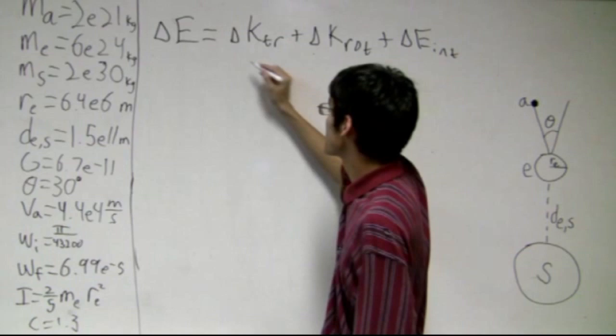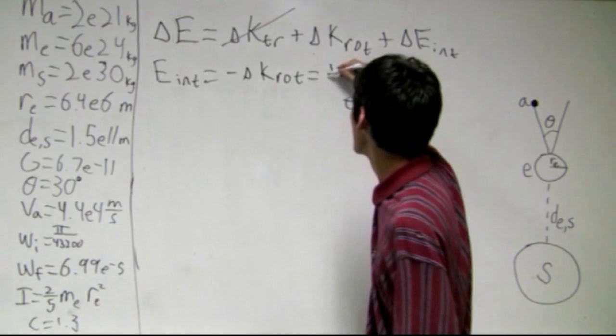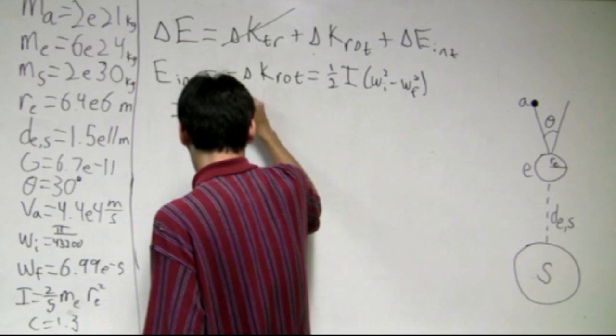In this change, there's no translational energy, so it's all rotational energy. So the delta E_internal, which we're looking for, is negative delta K_rotational, which is going to be one-half I of omega_i squared minus omega_f squared. I wrote all of those things out over there, so I can tell you that this is going to be about 1.98×10^28 joules.